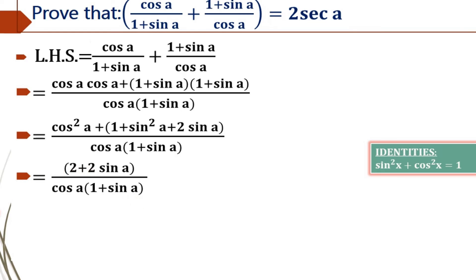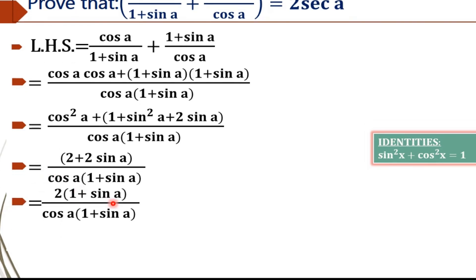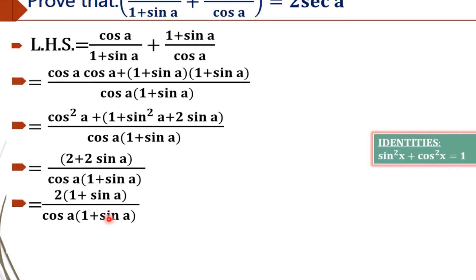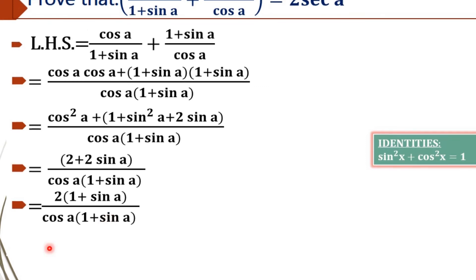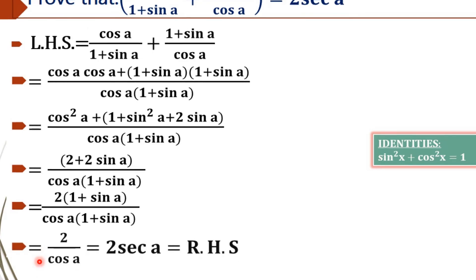By taking 2 outside, we will get 2 into 1 plus sin A, whole divided by cos A into 1 plus sin A. So 1 plus sin A will cancel from the numerator and denominator, and what remains is 2 by cos A, that is 2 sec A, which is equal to our RHS.